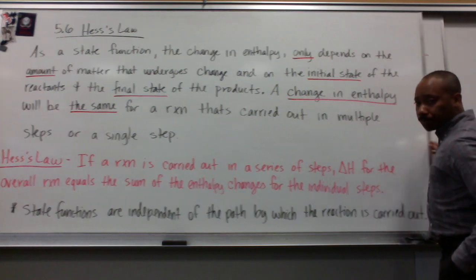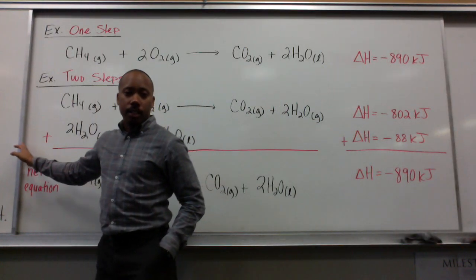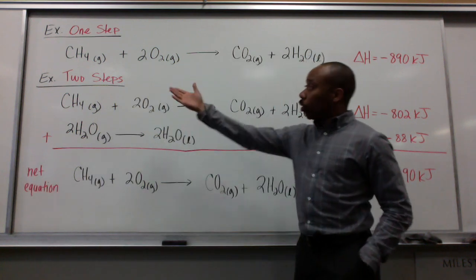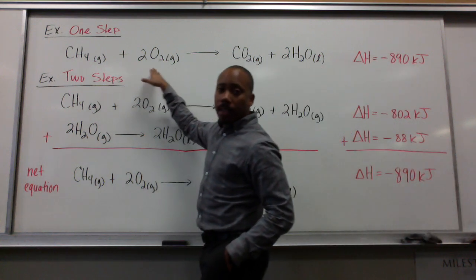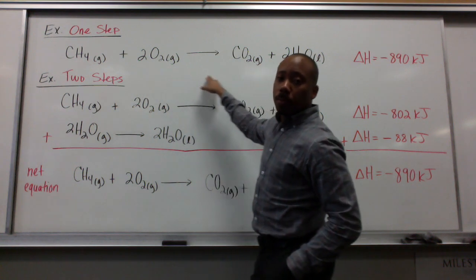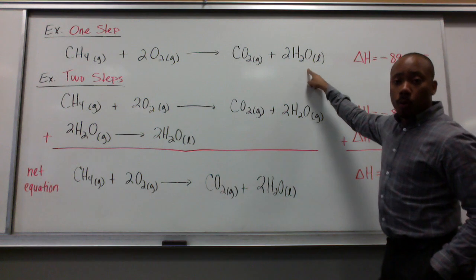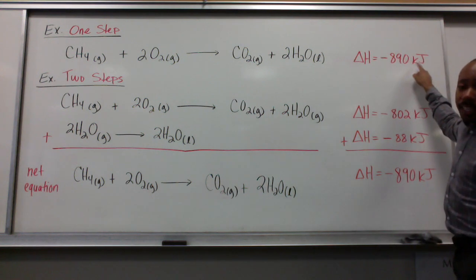And here's an example. Earlier in the chapter, we talked about the combustion of methane gas. And we looked at this example here. This is one step of one mole of methane gas reacting with two moles of oxygen to produce one mole of carbon dioxide and two moles of liquid water. The change in enthalpy is negative 890 kilojoules.